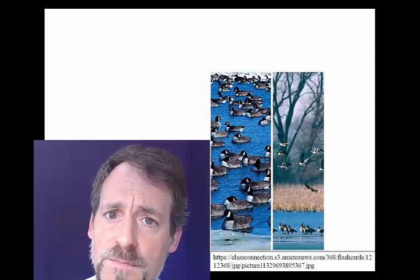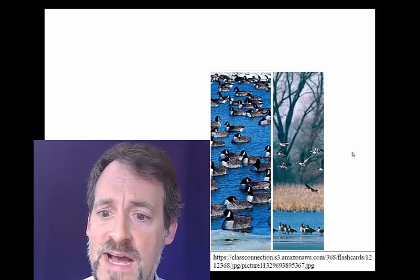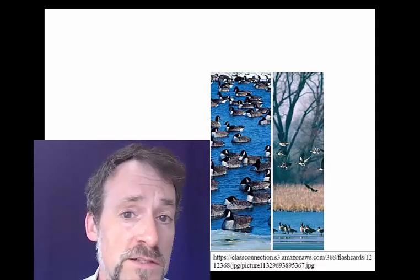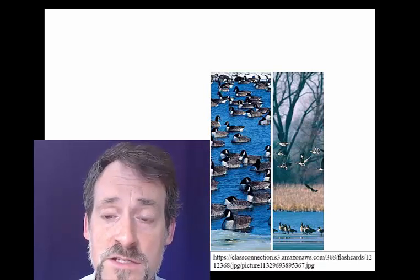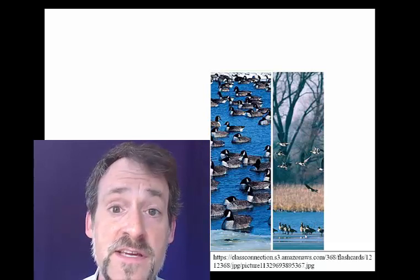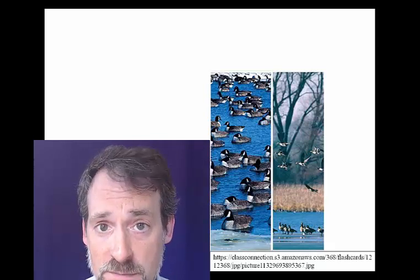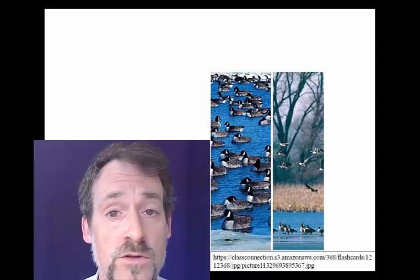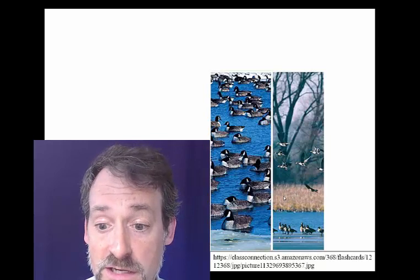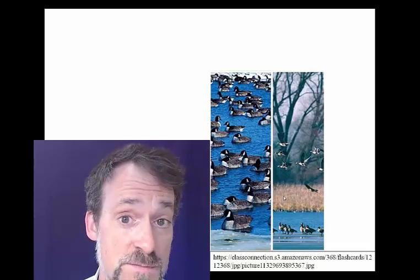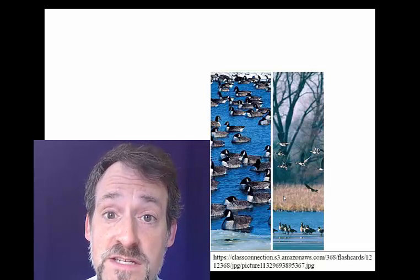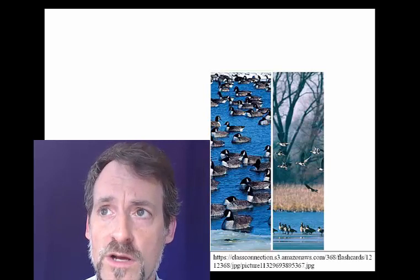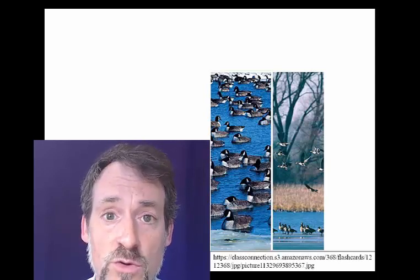At the next level up, ecologists look at all of the different species that might interact in a particular relatively limited area. So here, you're not just looking at the geese which are found in a particular lake. You're looking at the organisms that they might eat as food, and maybe the predators lurking in these reeds back here that might try to eat geese. All of these different species that are interacting are subject to another sort of set of ecological questions.